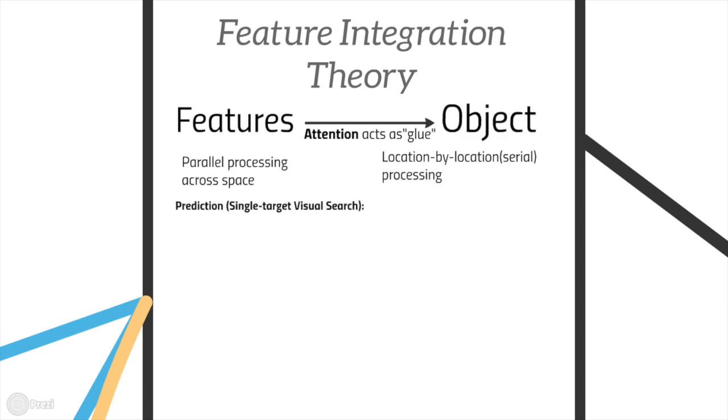This predicts that the detection speed for targets defined by a single feature should not change with the total set size, whereas the detection speed for targets defined by a conjunction of features should drop as the set size increases.